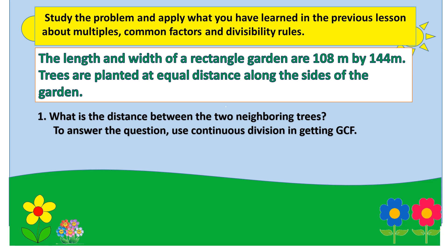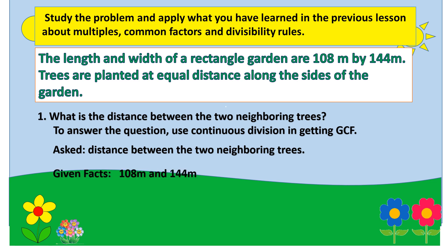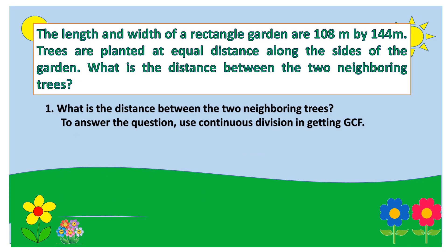What is asked in the problem? The problem is about the distance between the two neighboring trees. And what are the given facts needed to solve this problem? That is 108 meters and 144 meters — the length and width of the rectangular garden. And what operation are we going to use? That is continuous division. To solve this problem, we need to write the given facts: 108 and 144.